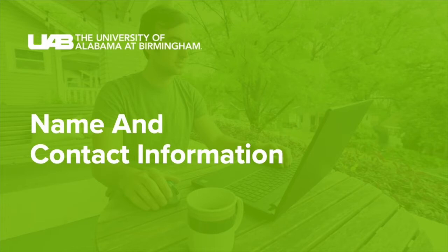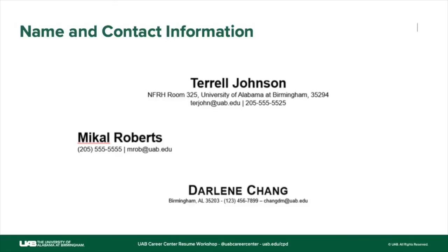Let's dive into the name and contact information. You can make sure that it's right justified, left justified, or in the center. You don't want to do too much — just keep it simple. Terrell Johnson has all of his information listed: exact address, UAB email address where he can be notified, and phone number. Please make sure that you include an email address that you answer as well as a phone that you answer. These need to be ways in which people can actually get in contact with you.